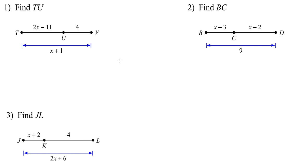Here's our quiz review for the quiz on segment addition postulate. Remember that this tells us that if we look at number one, since U is in between T and V, the length of TU plus the length of UV is equal to the length of TV.